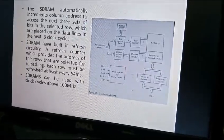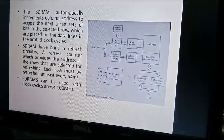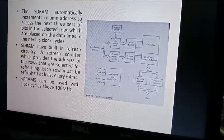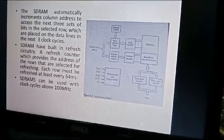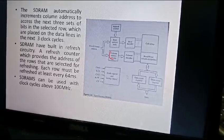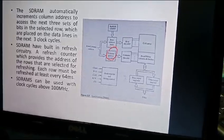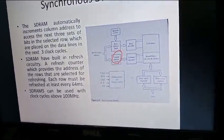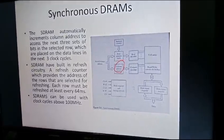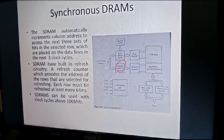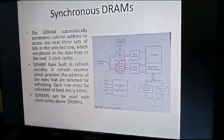The first data is placed on the data lines. The SDRAM automatically increments the column address to access the next three sets of bits. This is called the column address counter, which is used to increment the column address. SDRAM has built-in refresh circuitry - the refresh counter is part of this refresh circuitry.